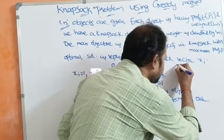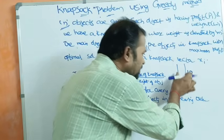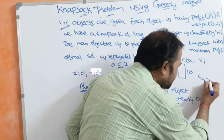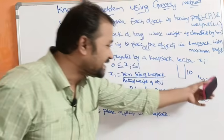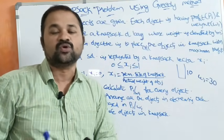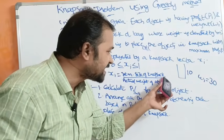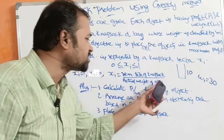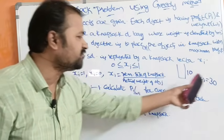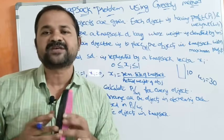Suppose the remaining size of the Knapsack is 10 kg, but the next object's weight is 30 kg. We cannot place a 30 kg object into a 10 kg bag fully. So xi equals the remaining size of the Knapsack divided by the actual weight of the object — that is, 10 divided by 30 — so one third of that object is placed in the Knapsack.